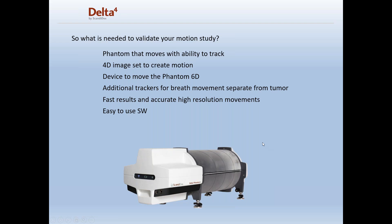What do you need to validate motion? First, you need a phantom that can track and give you the ability to see the radiation being delivered to a target. You also need a 4D image set so you can create a motion field, and a device that's going to move the phantom six-dimensionally, plus the ability to track breathing separately.